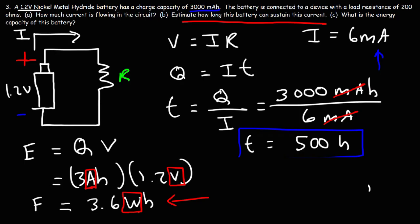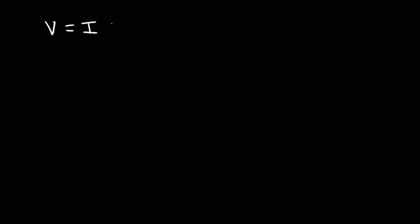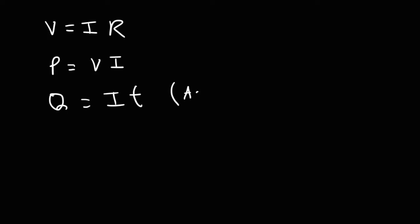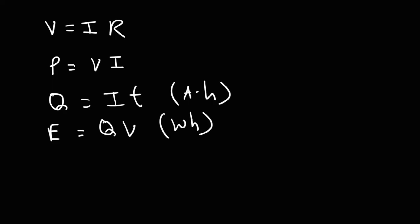Now you know how to determine the energy capacity and charge capacity of a battery and how they're related. To review the key formulas: Ohm's law — voltage equals current times resistance; power equals voltage times current; charge equals current times time (unit: amp hours); energy capacity equals Q times V (unit: watt hours); and energy equals power times time, which equals voltage times current times time.